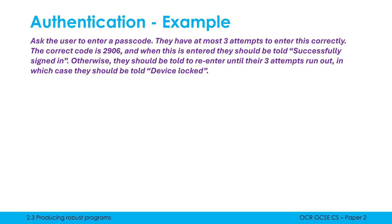We give the user three attempts to get the passcode correct. There is some repetition — we're told to re-enter until the three attempts run out. We're not doing it once, so therefore we need to use a loop. You could use a for loop in Python with something like break, but you need break to end the for loop early — and there's no direct equivalent in some other constructs.